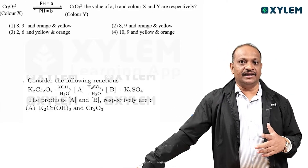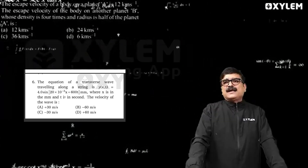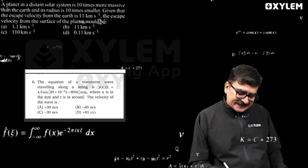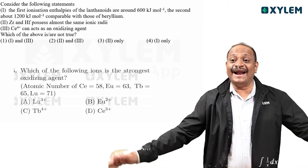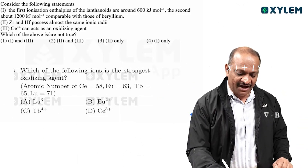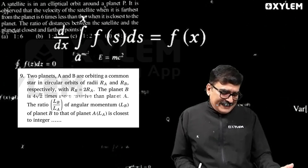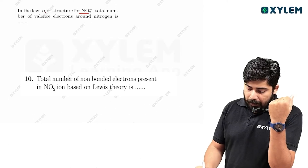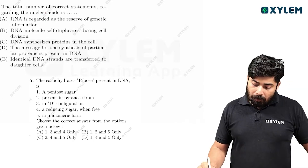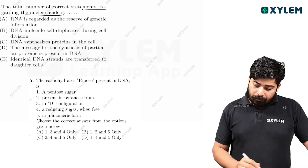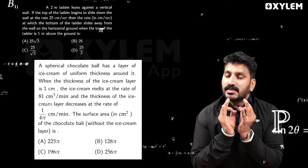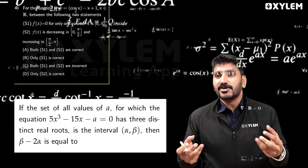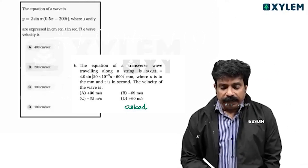We have discussed the question in this case. The escape velocity — in the prediction series. This planet in a distant solar system is 10 times. The satellite is in an elliptical orbit around planet P. In the Lewis dot structure for NO2-, the total number of valence electrons around the nitrogen. The total number of correct statements regarding the nucleic acid. y equals 2 sin pi into (0.5x minus 200t).